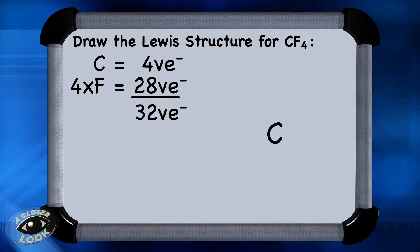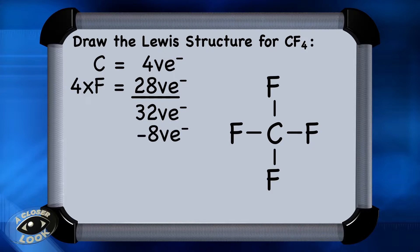Carbon, the least electronegative of the atoms, is central. Arrange the other atoms in the molecule symmetrically around it. Now start placing single bonds — there are 2, 4, 6, 8 electrons so far. Now 8 of the 32 electrons have been placed.